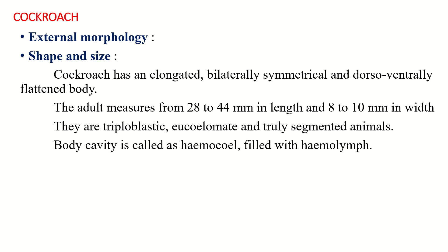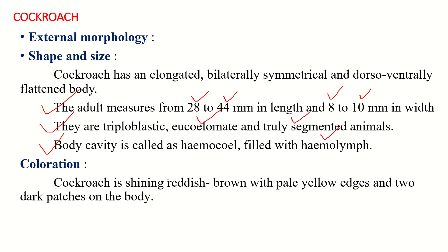The cockroach has an elongated, bilaterally symmetrical, and dorso-ventrally flattened body. The adult measures about 28 to 44 mm in length and 8 to 10 mm in width. They are triploblastic, eucoelomate organisms having a truly segmented body. The body cavity is called the hemocoel and is filled with hemolymph fluid. The cockroach is shining reddish-brown in color with a pale yellow edge and two dark patches on the body.